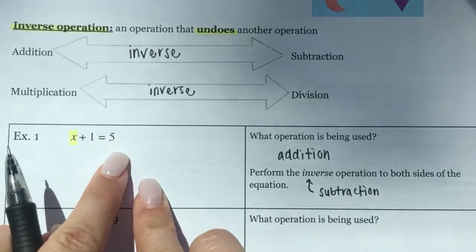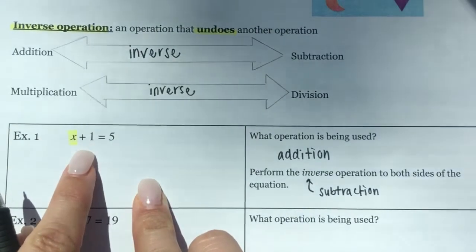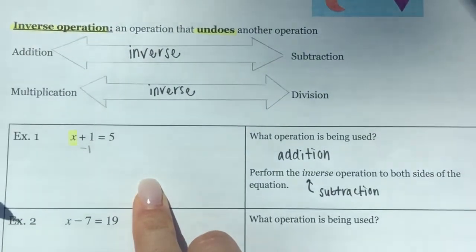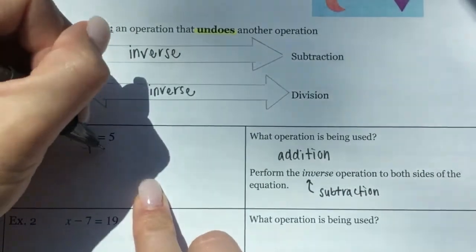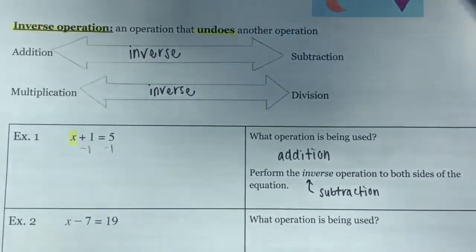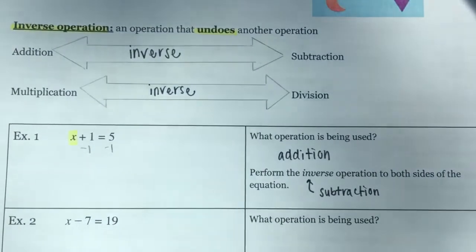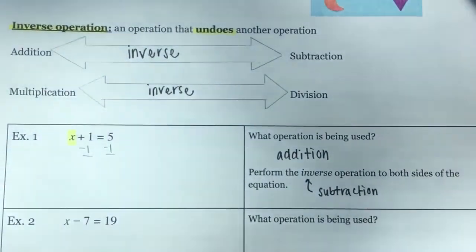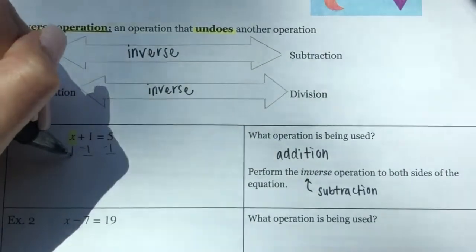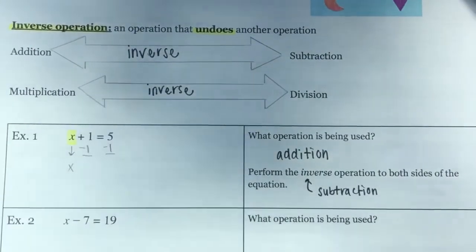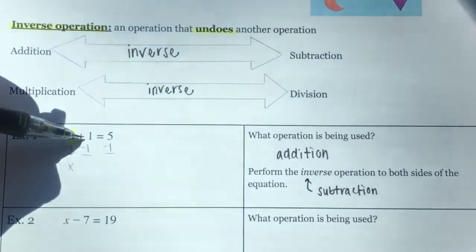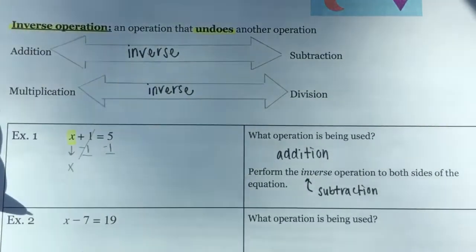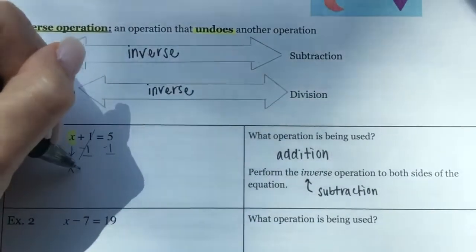If I subtract 1 from the left side to undo the plus 1, I also have to subtract 1 from the right side to keep the balance the same on both sides. Bringing down the X: positive 1 minus 1 cancels out to 0. You can write the 0 if you want, but you don't have to. Make sure you bring down the equal sign and keep everything lined up.